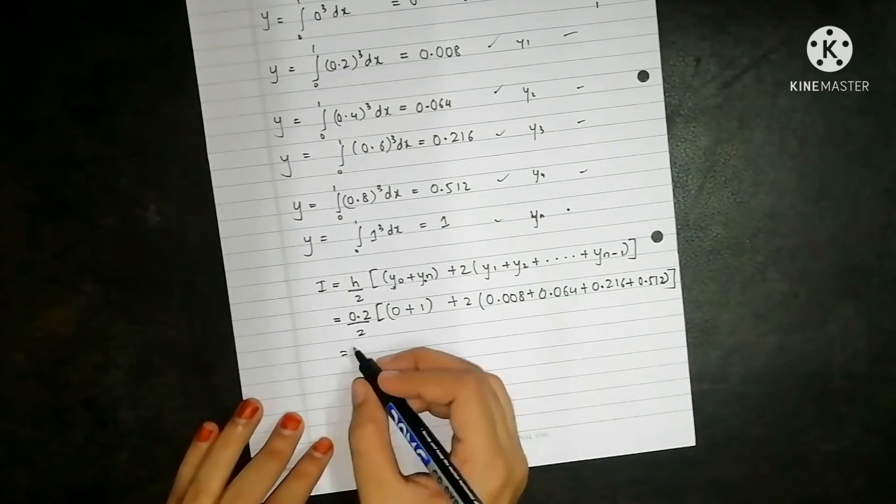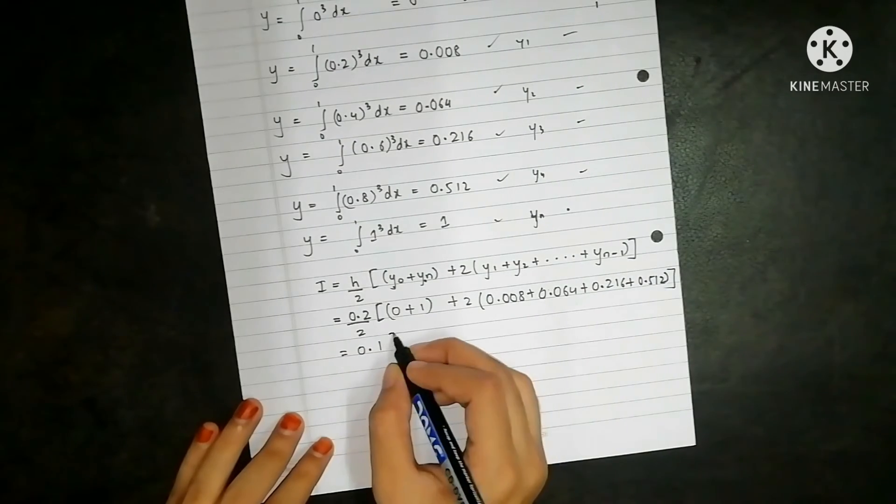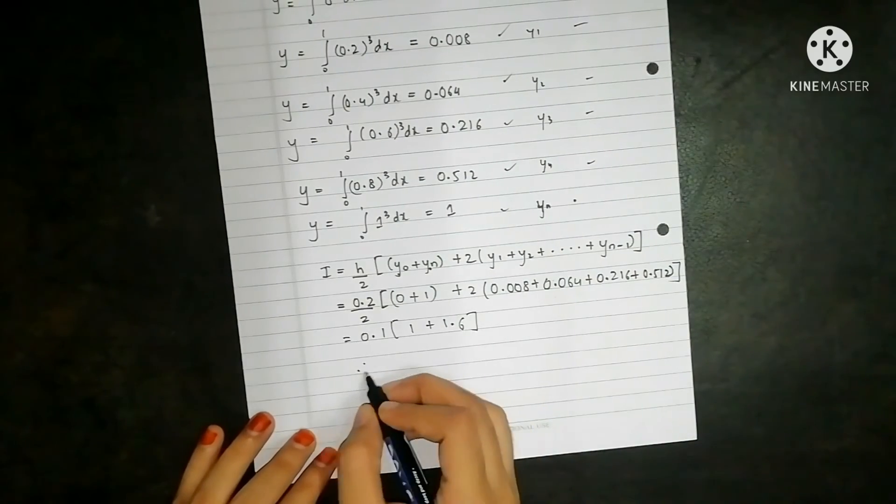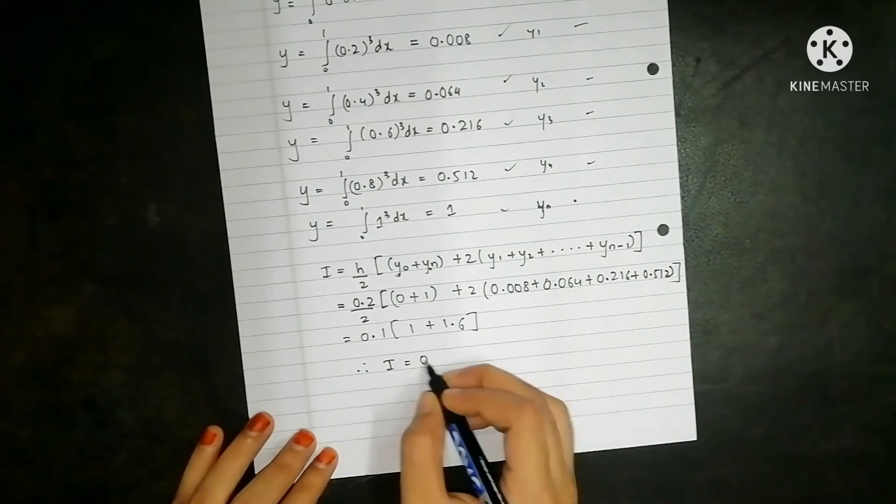Calculate this, we will get 0.1 into 1 plus 1.6. So i is equal to 0.26.